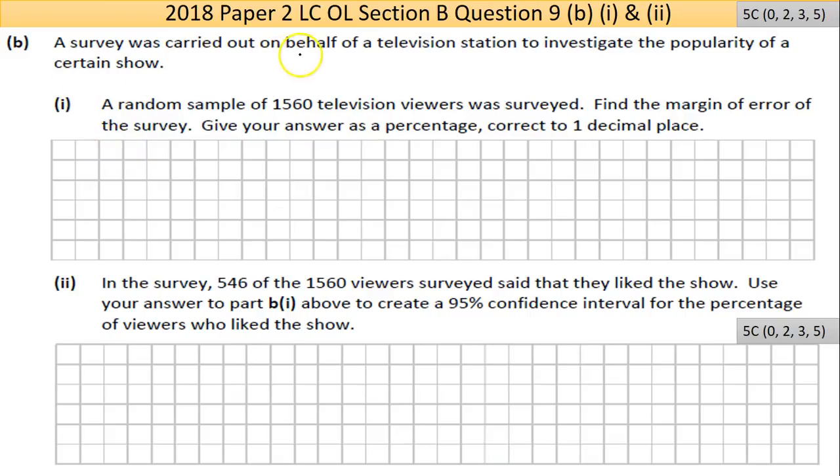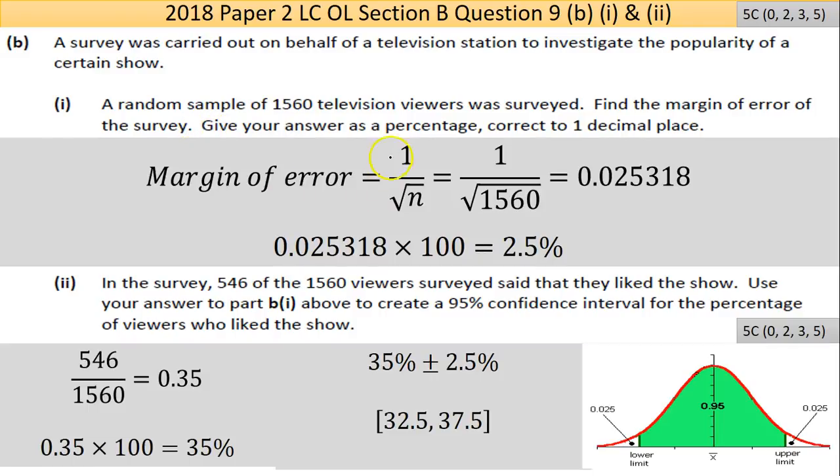Part B says a survey was carried out on behalf of a television station to investigate the popularity of a certain show. Part 1: a random sample of 1,560 television viewers was surveyed. Find the margin of error of the survey and give your answer as a percentage correct to one decimal place. The formula for margin of error isn't given in the math tables, so you have to memorize it. Statistics and probability are very important, so they're more than likely going to keep asking these kind of questions.